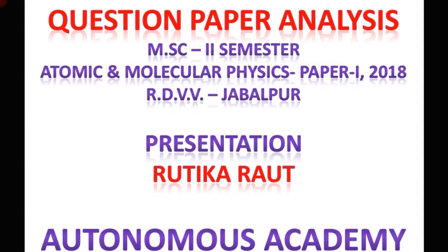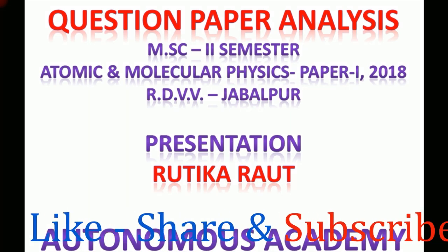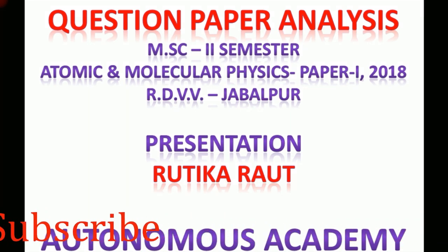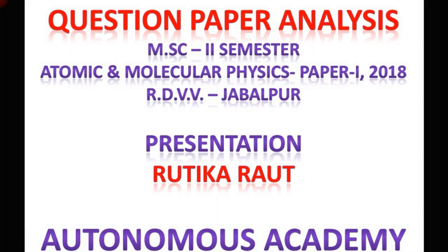Hello viewers, I welcome you all to the Autonomous Academy. This video covers the analysis of a question paper of MSc second semester. I am going to do the analysis of a question paper of atomic and molecular physics of year 2018. This question paper contains two sections: section A for 15 marks and section B for 25 marks, giving a total of 40 marks. We shall begin our discussion with the analysis of short answer type questions.